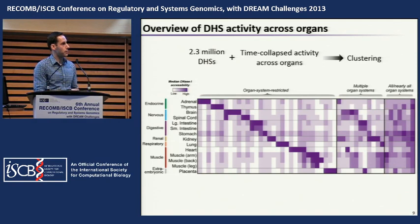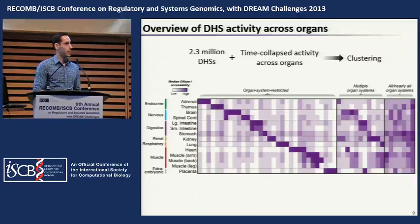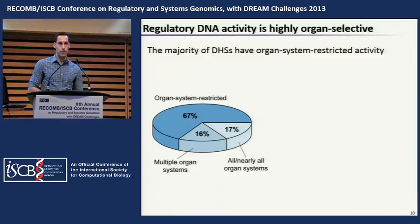There's a set of DHSs which span multiple organ systems — for example one active in both adrenal and kidney — and then a set on the far right that are active across nearly all organs. That very last column contains almost all of the promoters: 50,000 DHSs in that final cluster and half of them are promoter elements, so those tend to be active across multiple different organs.